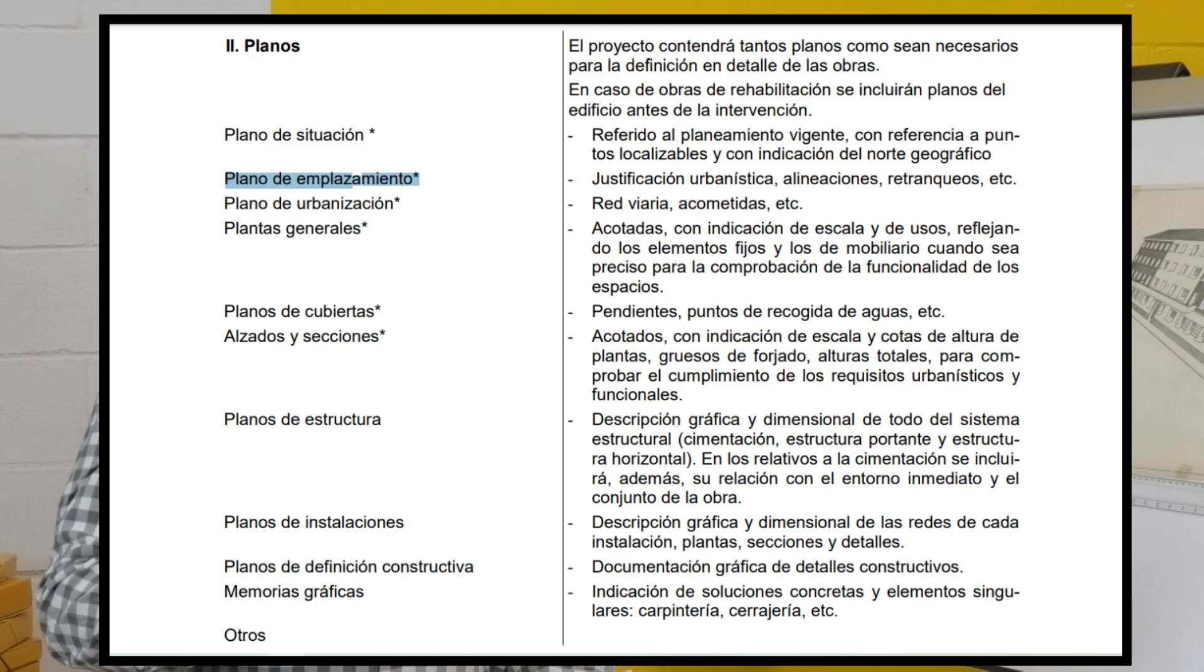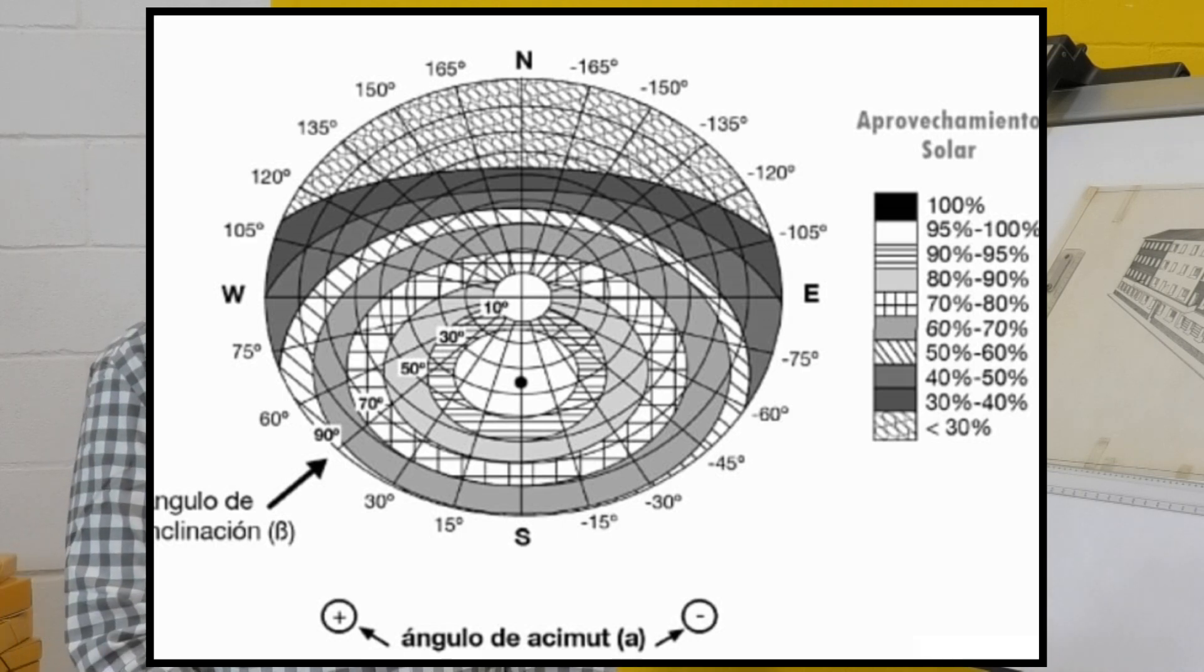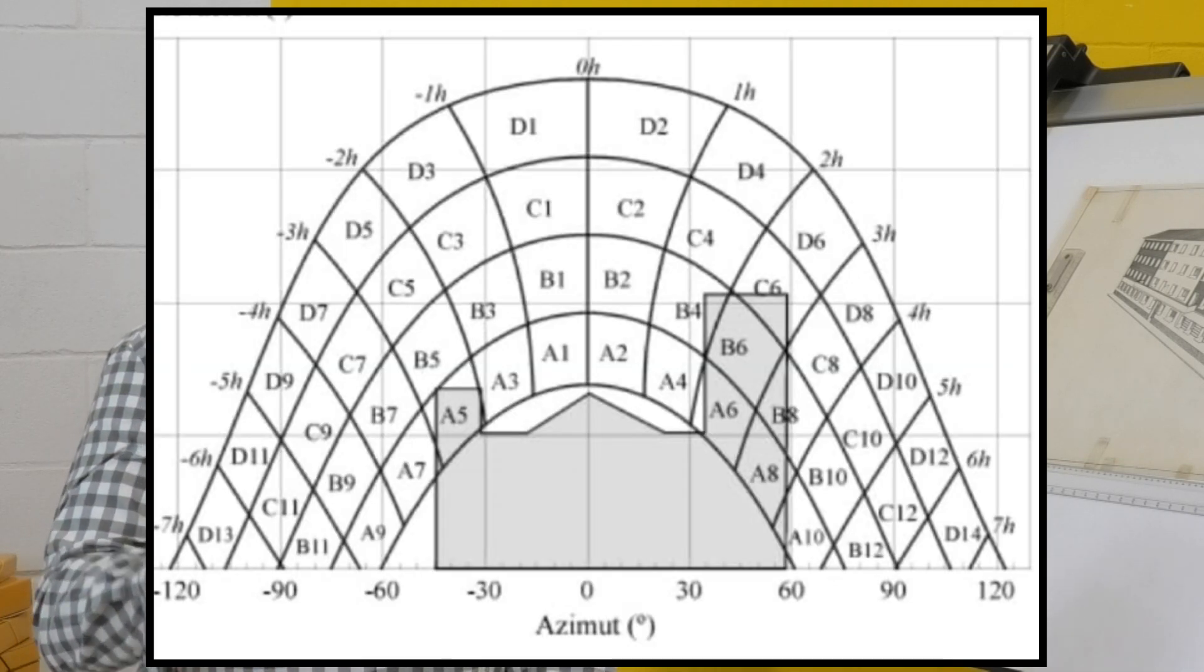Tenemos que hacer este plano porque en instalaciones muchas veces con las energías renovables nos vamos a cubierta a poner instalaciones fotovoltaicas o instalaciones solares térmicas y tenemos que analizar las sombras que nos hacen los edificios de alrededor. Tenemos que emplazar el edificio en un sitio y esto tiene que quedar perfectamente definido por el plano.